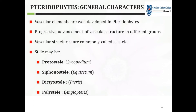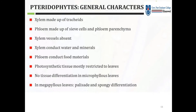Xylem is made up of tracheids and phloem is made up of sieve cells and phloem parenchyma. Xylem vessels are absent. Xylem conducts water and minerals; phloem conducts food material. Photosynthetic tissue is mostly restricted to leaves. In microphyllous leaves there is no tissue differentiation, whereas in megaphyllous leaves palisade and spongy differentiation is present.